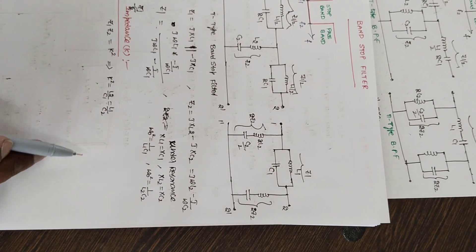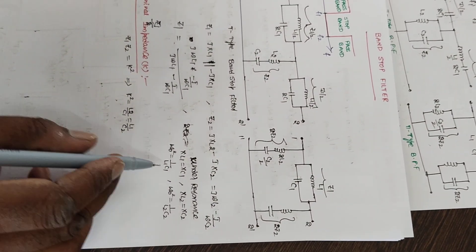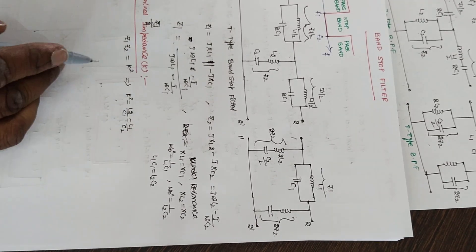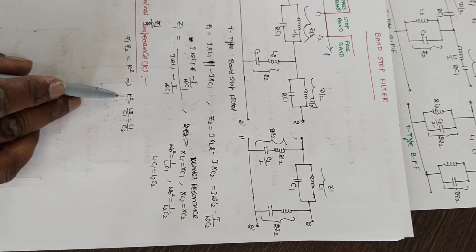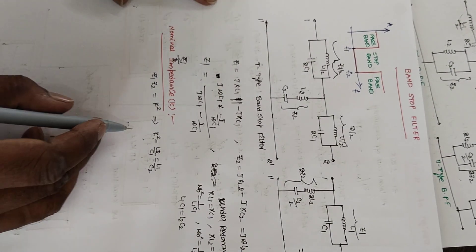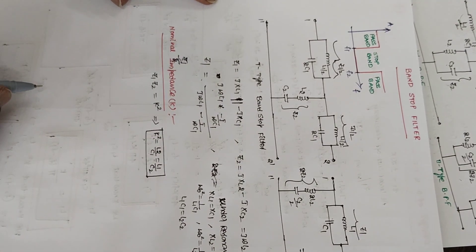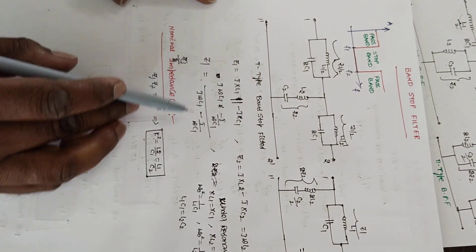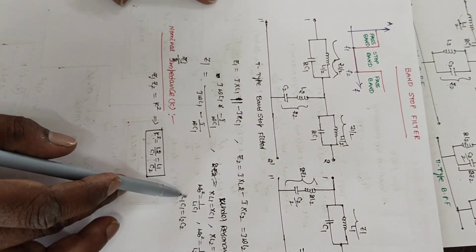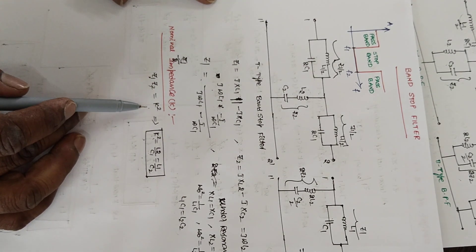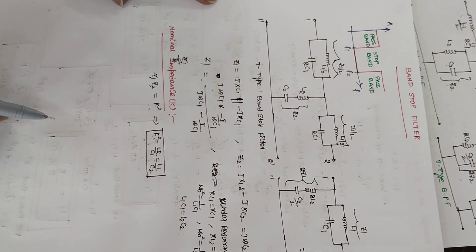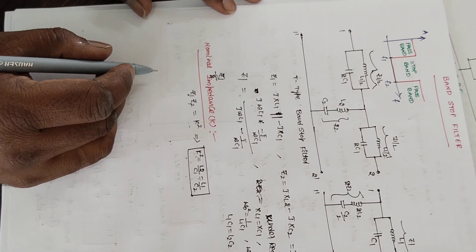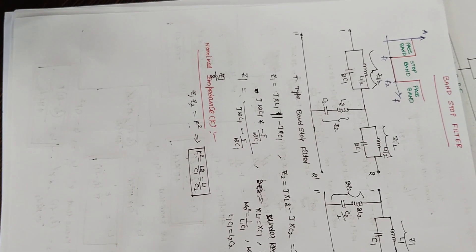Using ω₀² = 1/(L1·C1), we get L1·C1 = L2·C2. Using this in finding K gives K² = L2/C1. So the nominal impedance relationship is K² = L2/C1. If you find the multiplication of Z1 and Z2 and use this derivation, you will get K² expressed this way. Now coming to the cutoff frequencies.